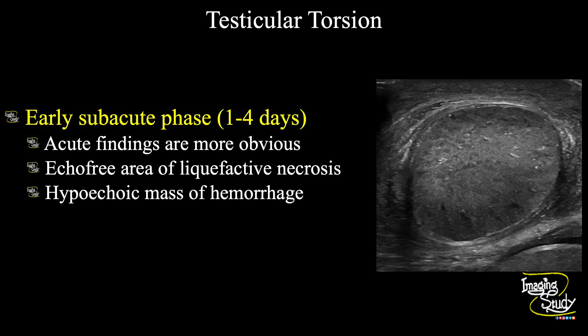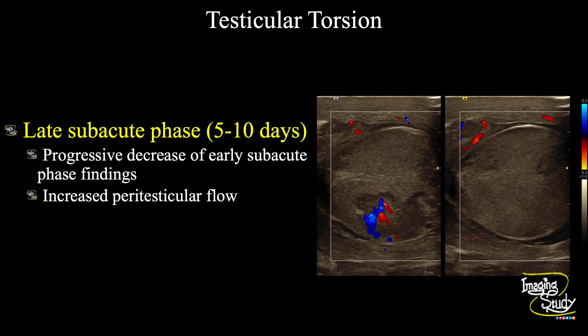In the early sub-acute phase, you will see some anechoic necrotic spaces within the testicular parenchyma, and there may be a hypoechoic mass of hemorrhage also. In the late sub-acute phase, there will be a progressive decrease of the early sub-acute phase findings with an increase in peritesticular flow.